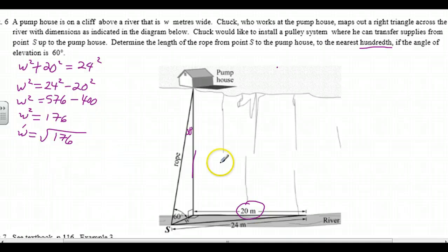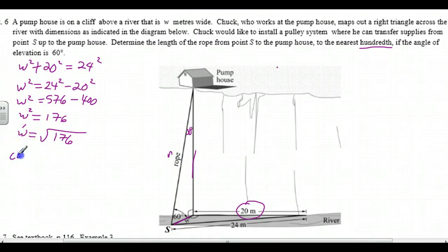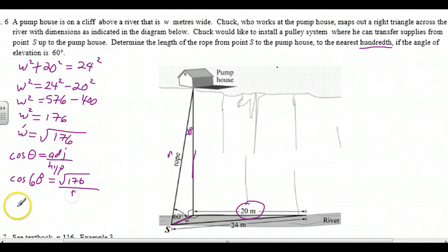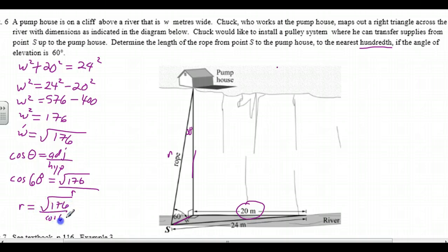Now we switch our attention to the second triangle. We have 60 degrees; this is adjacent and this is the hypotenuse — let's call this R. The cosine ratio applies: cos theta is adjacent over hypotenuse. The cosine of 60 degrees equals the adjacent side, root 176, over the hypotenuse R. Interchanging these two, R equals root 176 over the cosine of 60 degrees. We want to calculate that to the nearest hundredth.